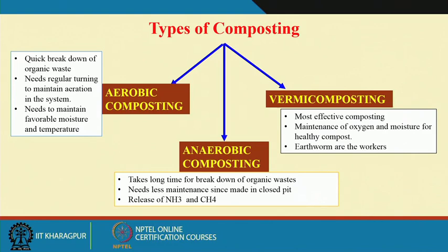There are different types of composting. In aerobic composting, the process takes place in the presence of oxygen, giving quick breakdown of organic waste. It requires maintenance by turning organic materials regularly in the composting beds to maintain moisture and temperature. Favorable moisture and temperature must be maintained for proper and early decomposition of organic residues. In anaerobic composting, the process takes place in the absence of oxygen under reduced conditions, which takes a long time for breakdown of organic waste and needs less maintenance because it is done in a closed pit.